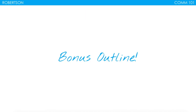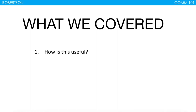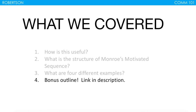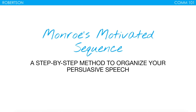There's also a bonus outline. If you're watching this on YouTube, I've got a link to a Dropbox-hosted Word document that has all of this structure so you can type directly on it — it has even more suggestions to get really specific. So go ahead and download it if that's helpful. Today we covered how this is useful, the structure of Monroe's Motivated Sequence, four different examples, and the bonus outline. This is Monroe's Motivated Sequence: a step-by-step method to organize your persuasive speech. Thank you so much.